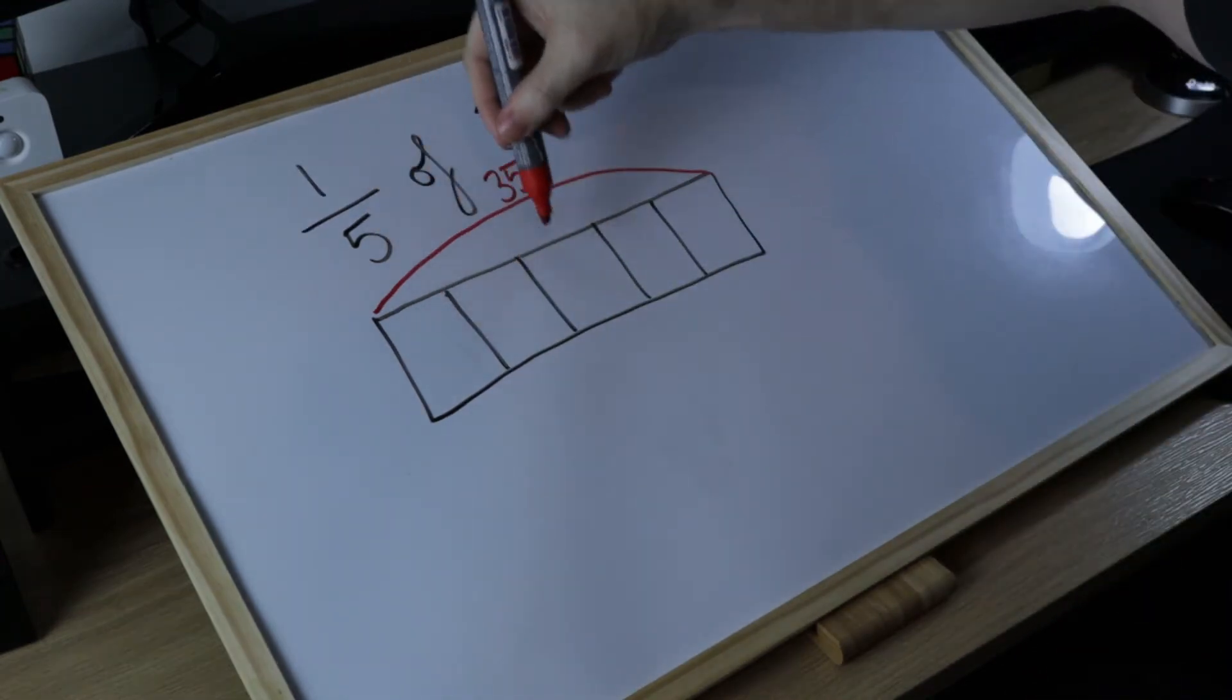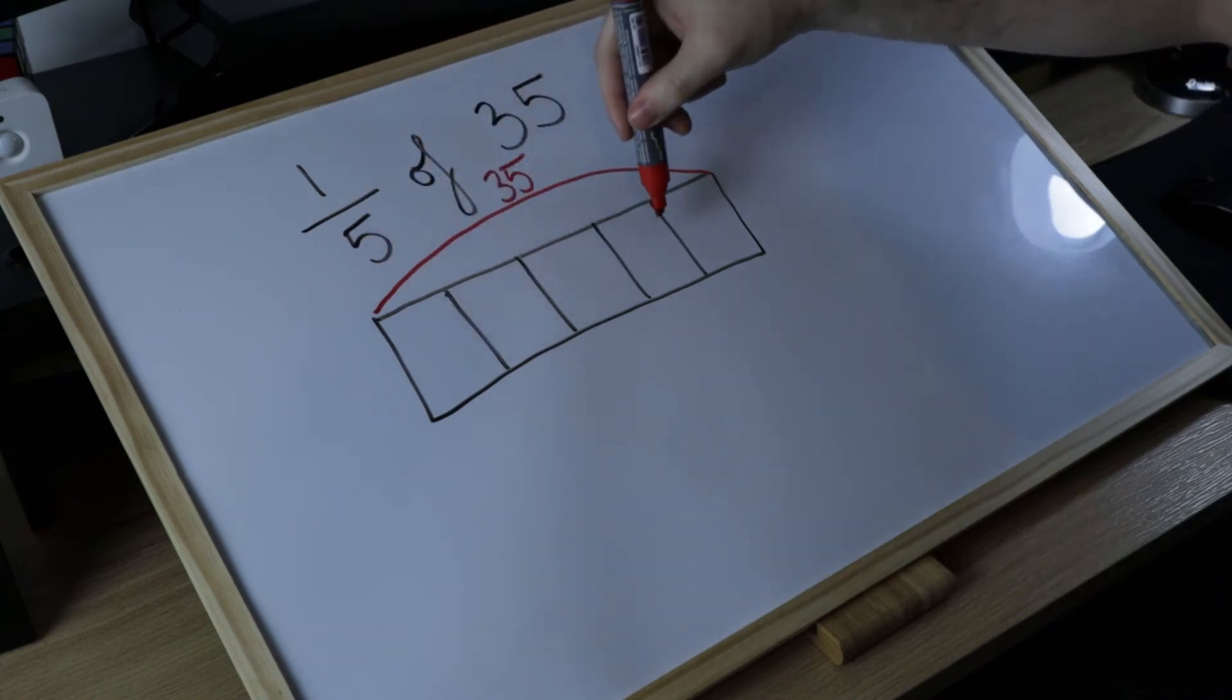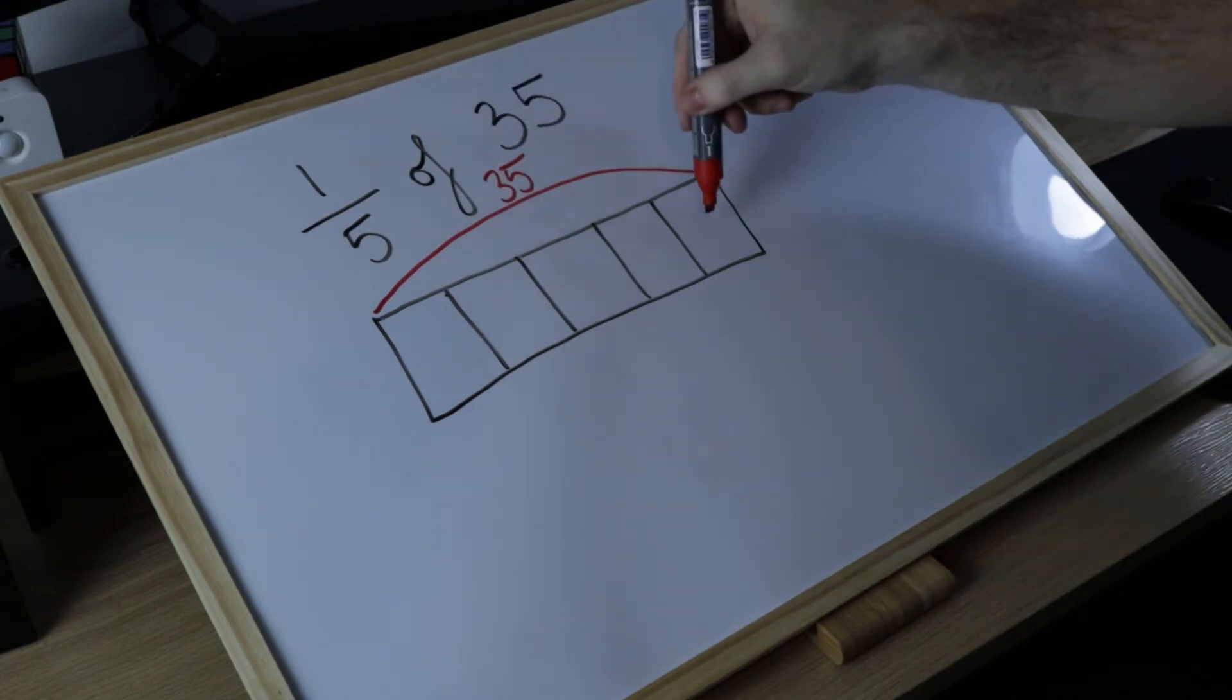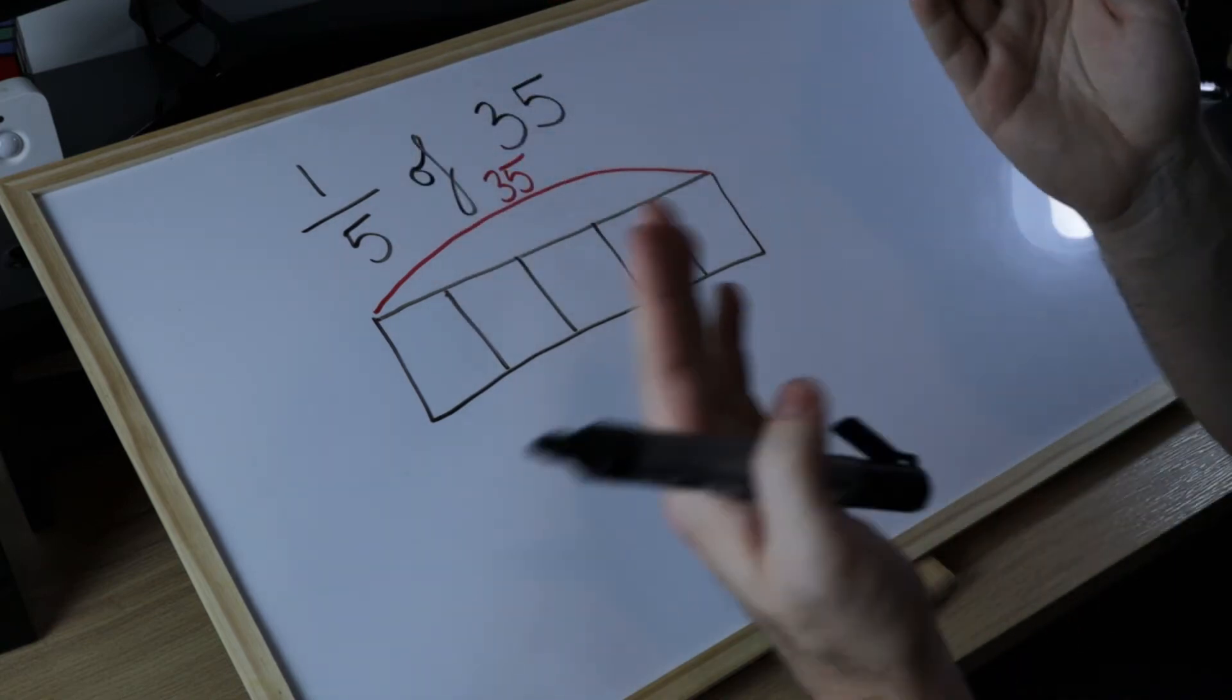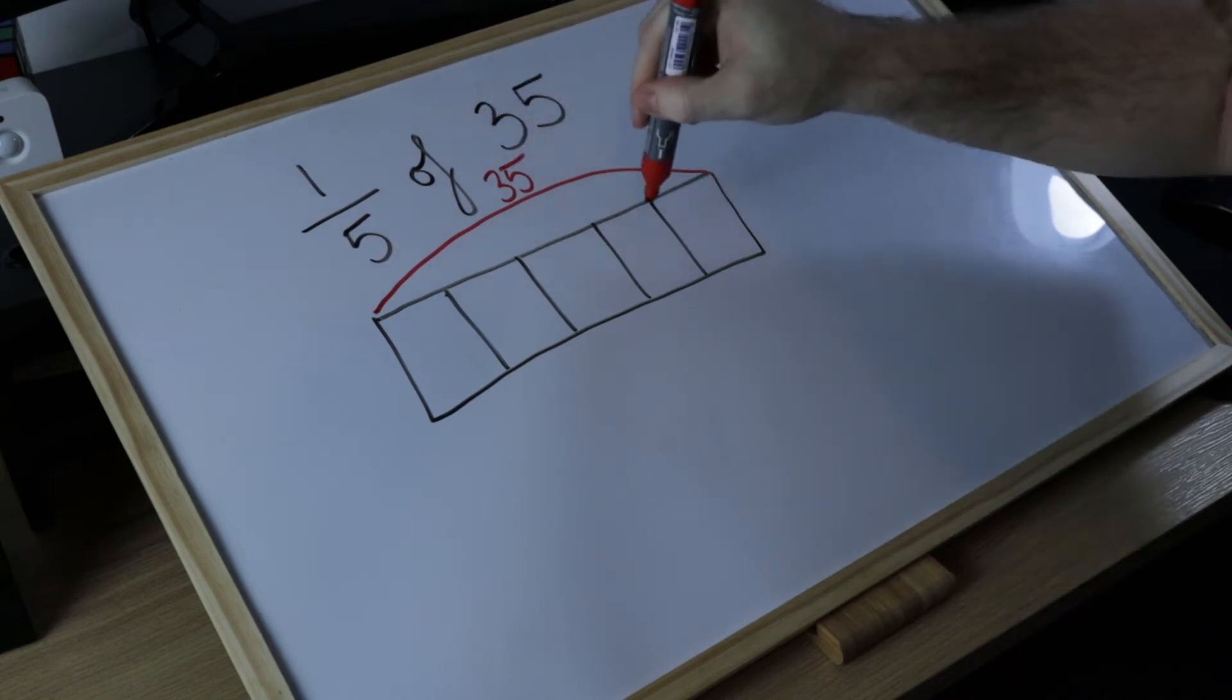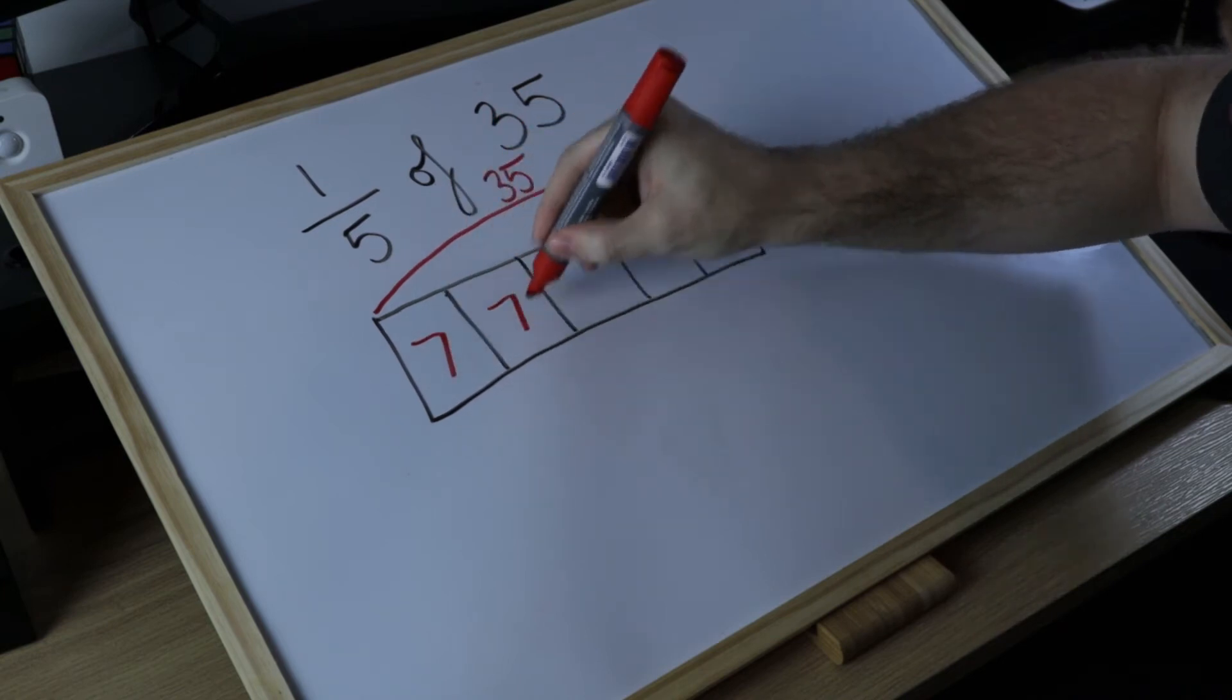Now that we've split our whole into five equal parts, we need to start thinking about what number could fill each gap. Well it must be of the same value and we can use division to help us solve this question. 35 divided into five equal parts equals what? And this is where times table facts are vital. 35 divided by five equals seven. So I fill in each box, seven.